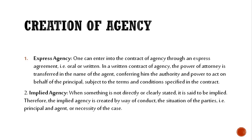Next है implied agency। Implied का मतलब है कोई conduct के through। When something is not directly or clearly stated, it is called implied। कोई written या oral clear-cut contract नहीं किया गया — agency conduct, situation of the parties, और circumstances से create होती है। Principal और agent का कुछ ऐसा conduct हो जिससे सामने वाले को लगे कि ये दोनों agent-principal के relationship में हैं — ऐसी agency को implied agency बोलते हैं।